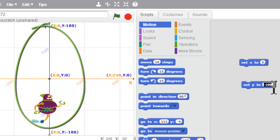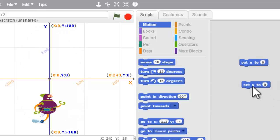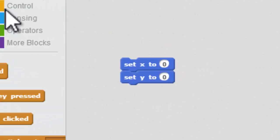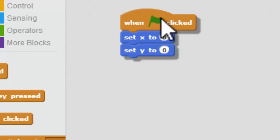Awesome. So we're going to set this one to be zero as well. Great. Now snap those together and I'll put a when green flag clicked on it.